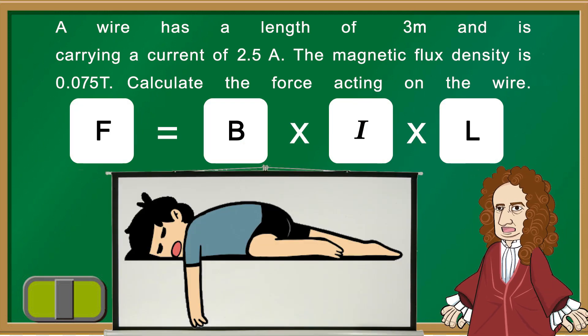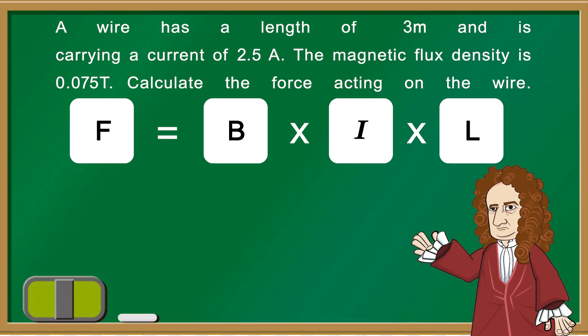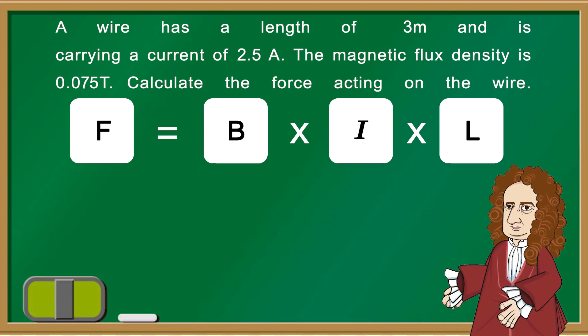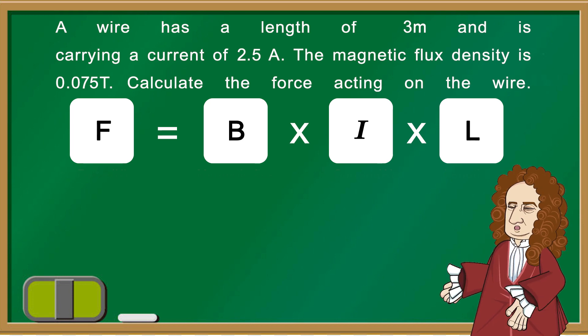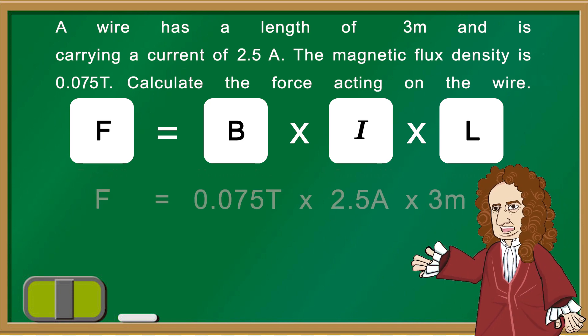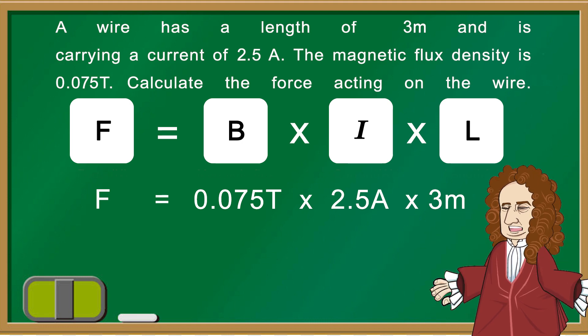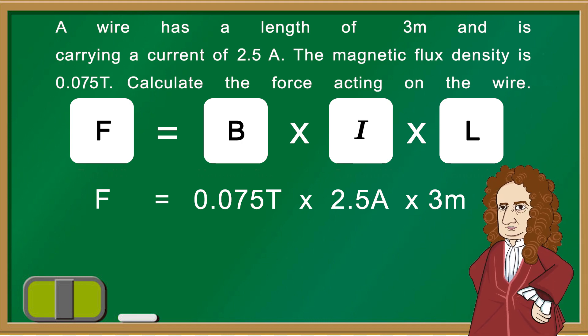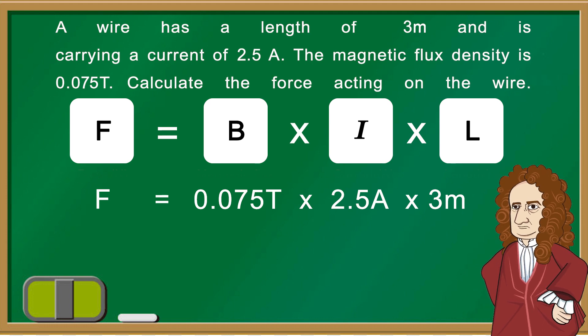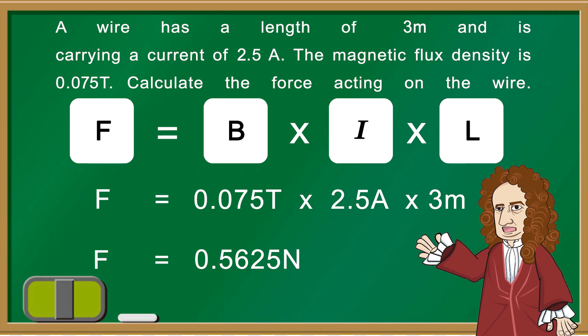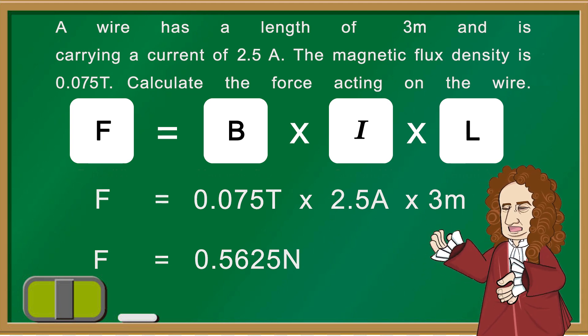If you're too lazy to calculate, we'll do it for you. As we said, the force equals the magnetic flux density multiplied by the current multiplied by the length of the magnetic flux. The magnetic flux is 0.075 Tesla, the current is 2.5 Amperes, and the length of the wire is 3 meters. Putting this number in the equation, we got the result for the electromagnetic force which is 0.5625 Newton.